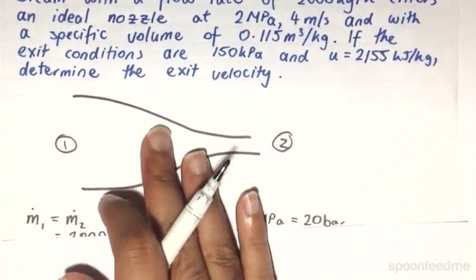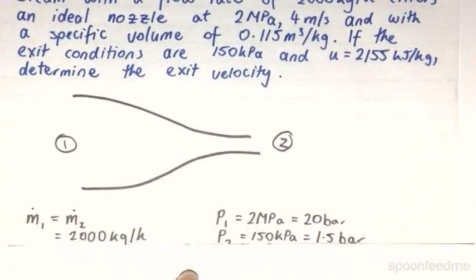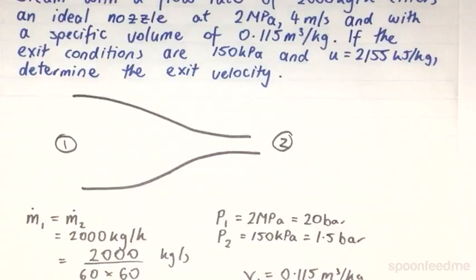Gathering all the information from our question, we are given that the mass flow rate is 2000 kg per hour, which is 0.55 kg per second when converted. We also know that P1 is equal to 2 MPa, which is 20 bar.